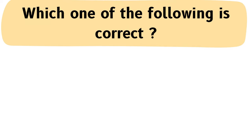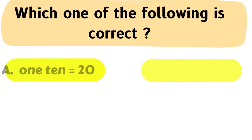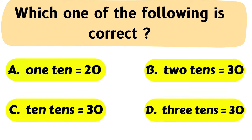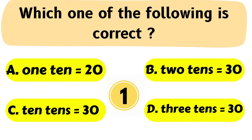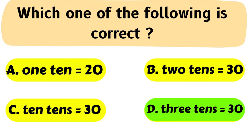Question No. 8: Which one of the following is correct? The correct answer is Option D: 3 tenths equals 30.